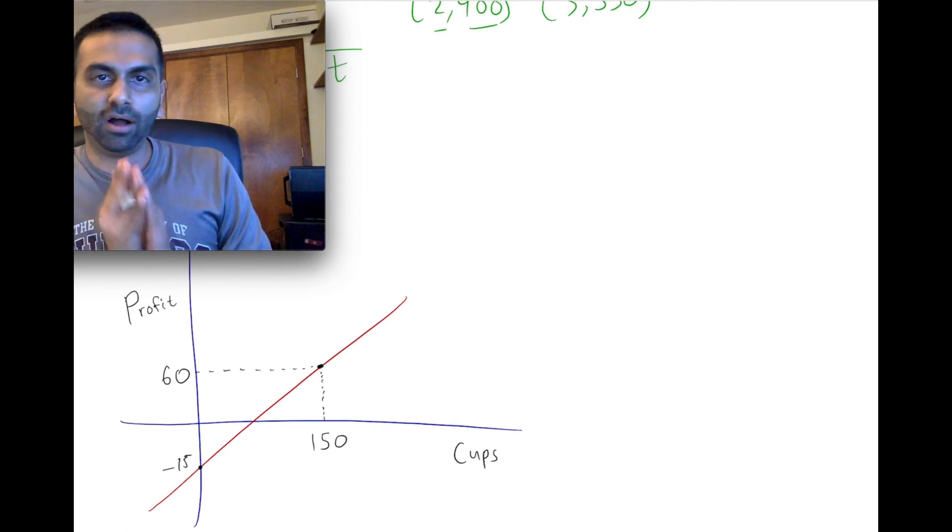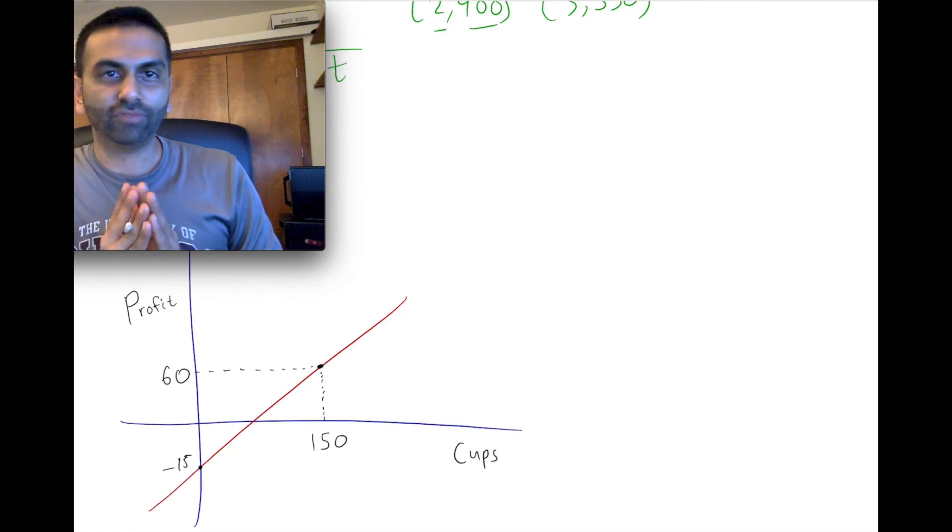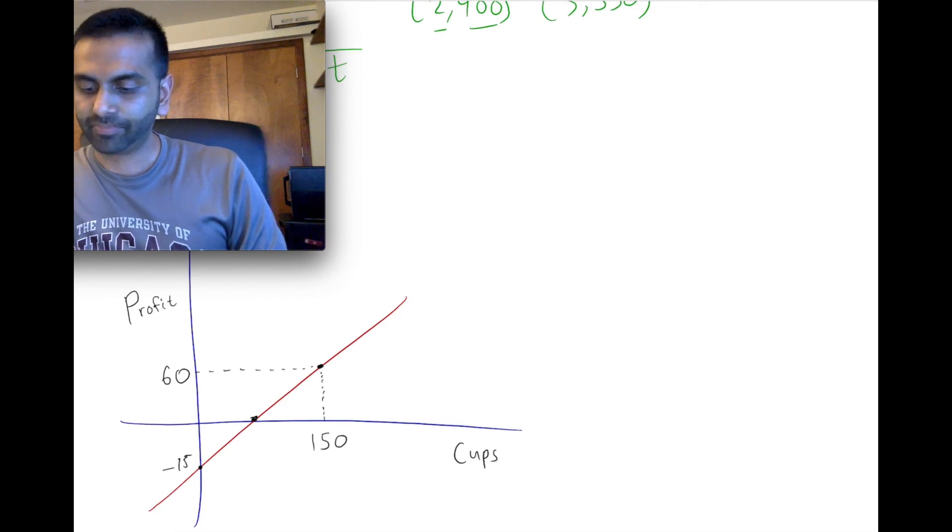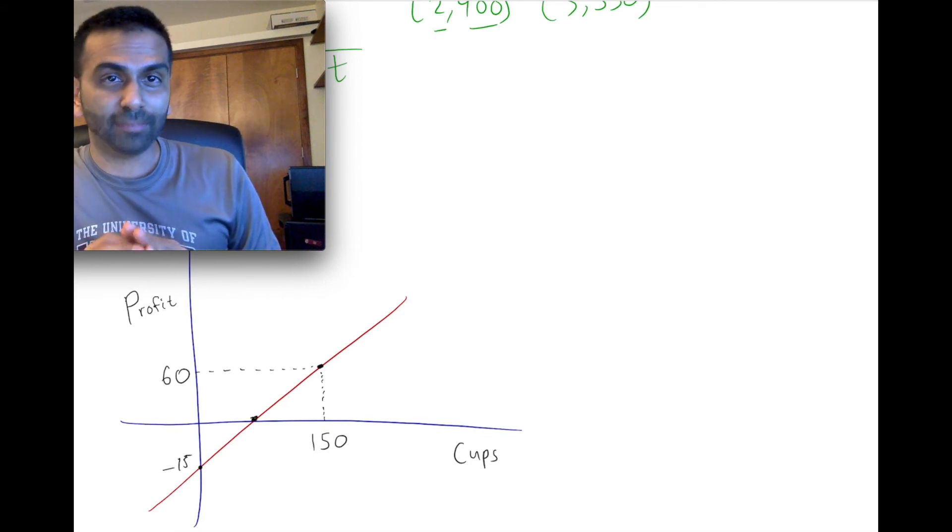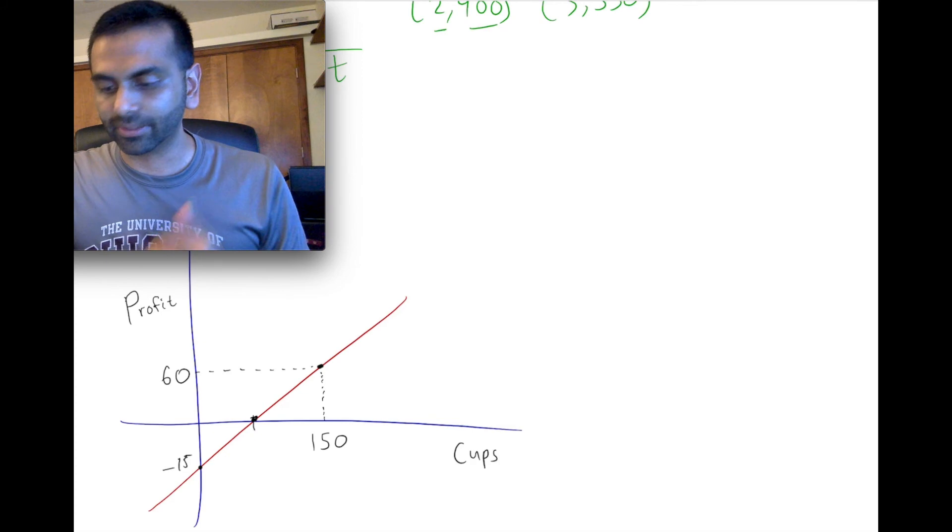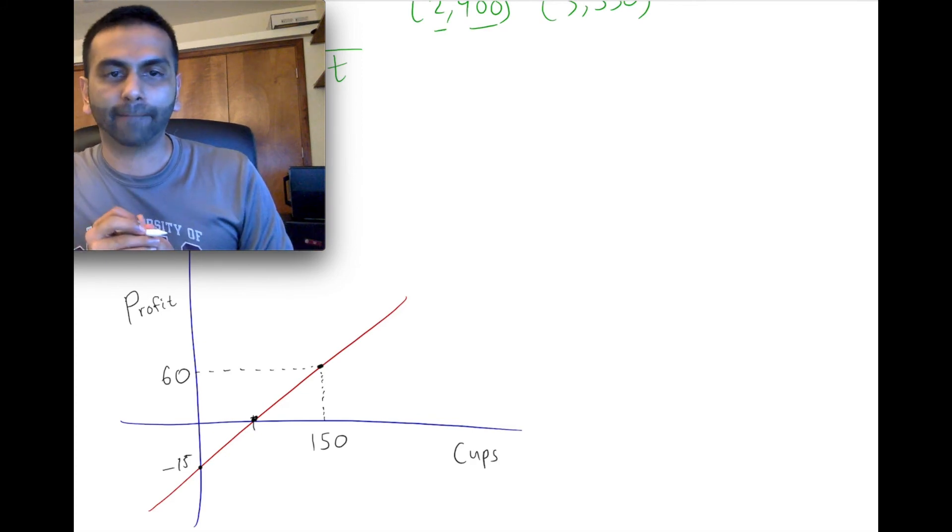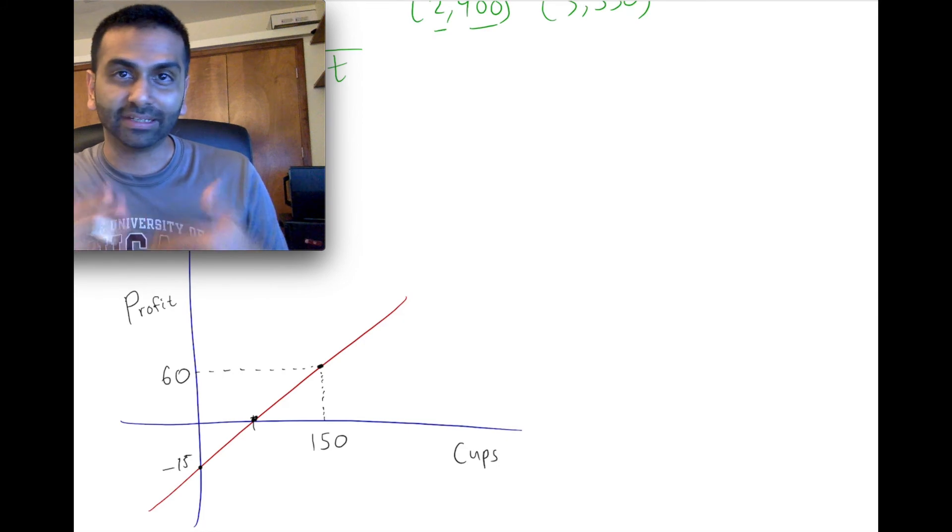And it also gives you this one point that when you sell 150 cups of lemonade, your profit is 60 bucks. So given all this, the question is find the break-even point, or in this case, what's called the X intercept, which is the X value where the Y is zero. So find that point. And in the process, really, find the equation of the Y, find the MX plus B. So first of all, let's find the MX plus B.